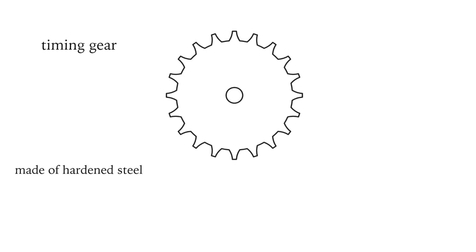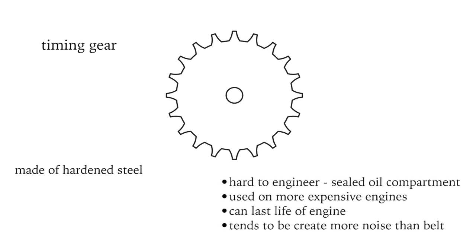Timing gears are made of hardened steel and they can last the lifetime of the engine. However, the gears need to be lubricated with engine oil which is something not needed with the rubber timing belts, so they are harder to engineer and therefore more expensive.